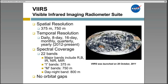The Suomi NPP satellite is also in the same orbital plane as the A-Train, which includes satellites such as CloudSat, CALIPSO, and Terra MODIS, but it's at a higher altitude. It is sun-synchronous at 824 kilometers with a local equator crossing time of approximately 1:30 PM. There are 22 bands measured by VIIRS, including bands in the visible spectrum such as red and blue, as well as bands in the infrared. The near-infrared bands have been shown to be particularly useful for applications such as wildfires.